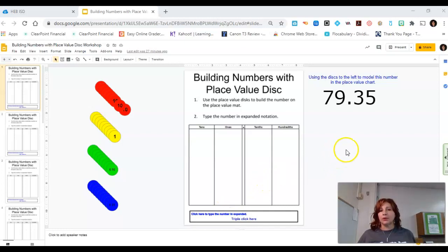Welcome to Building Numbers with Place Value Disc. I am going to use this first example of 79.35 to show you how to use this.